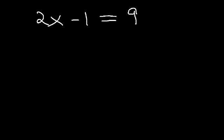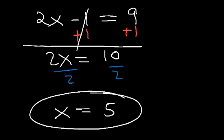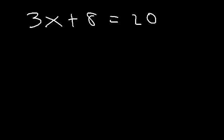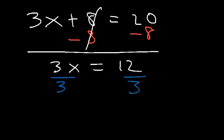Now let's work on a few multi-step problems. If we have 2x minus 1 is equal to 9, what do we need to do to solve for x? You want to add 1 to both sides first — it's easier that way. 9 plus 1 is 10. At this point, divide both sides by 2. 10 divided by 2 is 5, so x equals 5. For the next example, we're going to subtract both sides first: 20 minus 8 is 12. Then divide both sides by 3. x equals 12 divided by 3, which is 4.